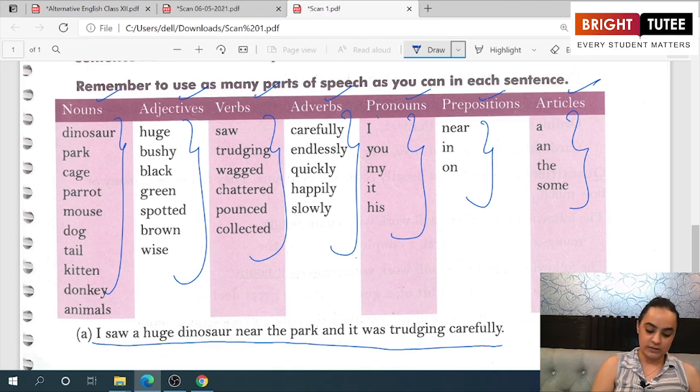One example has been given to you: 'I saw a huge dinosaur near the park and it was trudging carefully.' So I chose 'I saw' and then 'a huge' from the adjectives, 'dinosaur' from the nouns, and this way I framed one sentence.